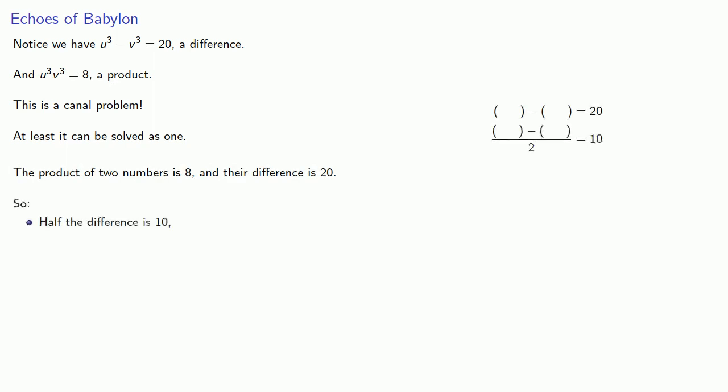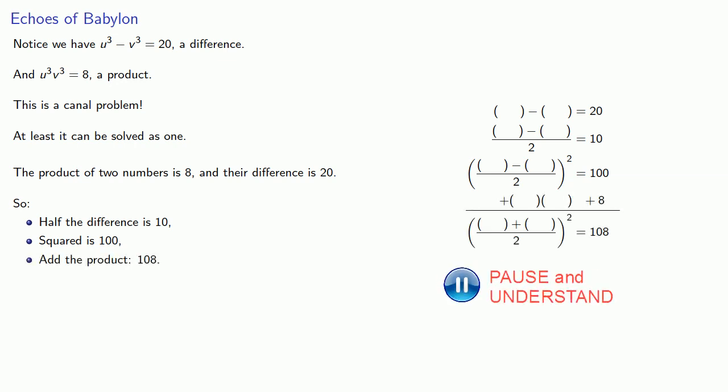So half the difference is 10. Squared is 100. If we add the product, we get the square of the sum is equal to 108. We can then take the square root, and so we can find that half the sum is the square root of 108.